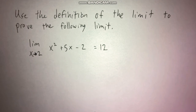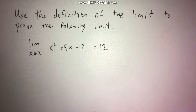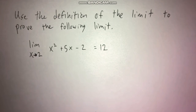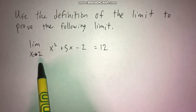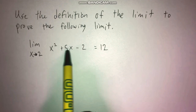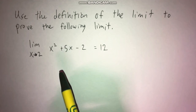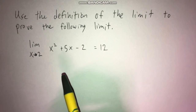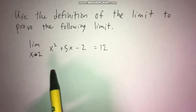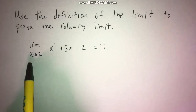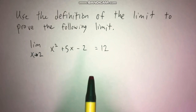Clearly, just taking a quick look at this limit, we can tell pretty easily that this limit equals 12. This is a polynomial which is going to be continuous everywhere, so we can pretty easily tell that if we just plug in 2 into this, we're going to get 12.